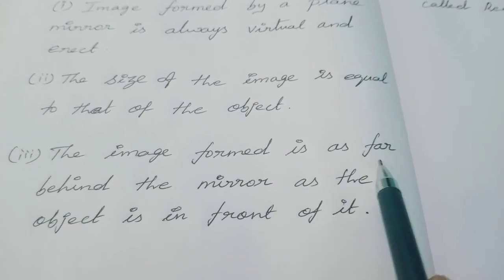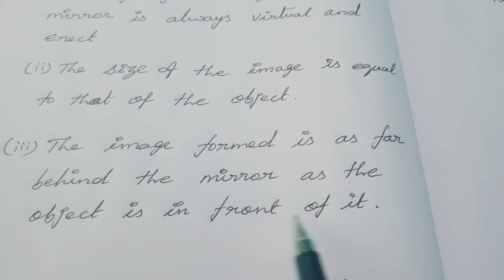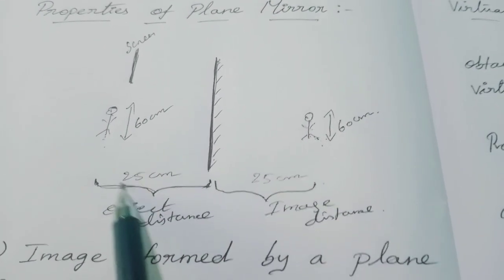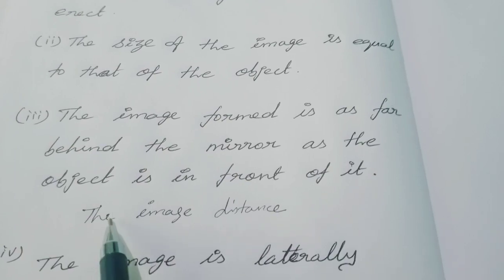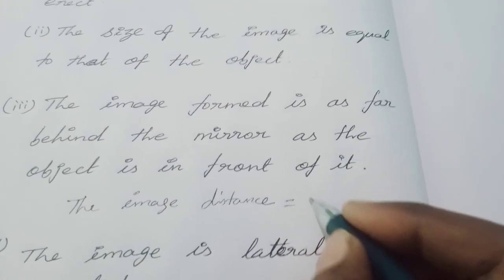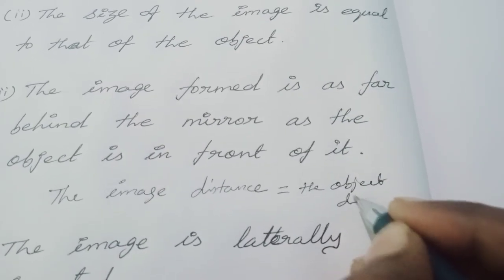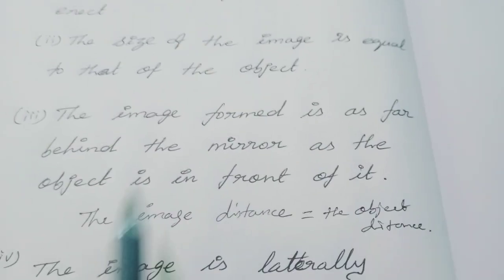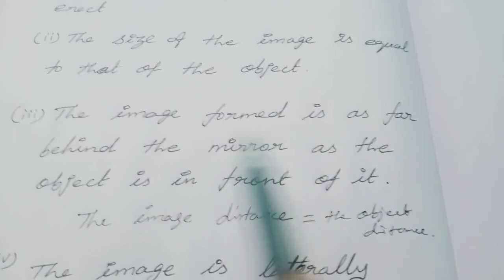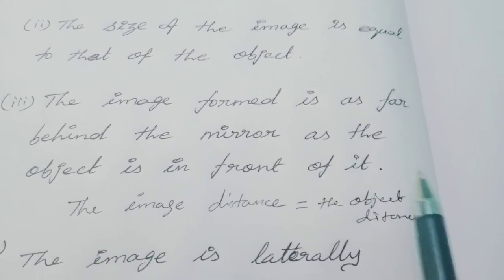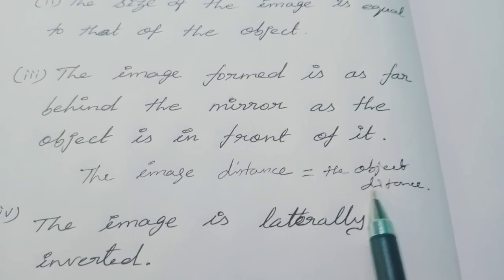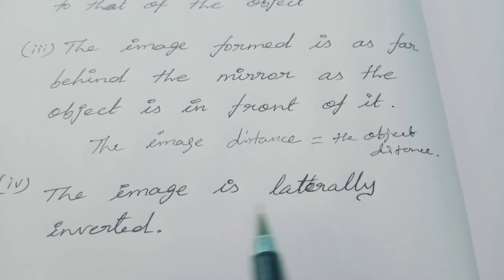The third point: the image formed is as far behind the mirror as the object is in front of it. If you find this point tough, you can also write it simply as: the image distance is equal to the object distance. The meaning is the same.